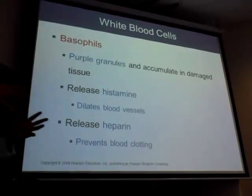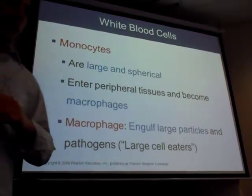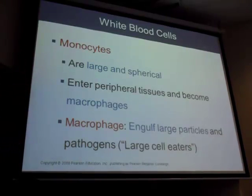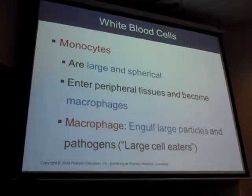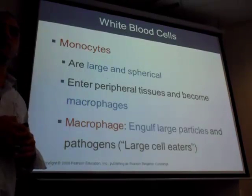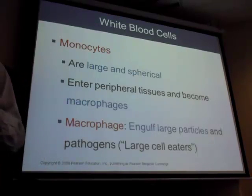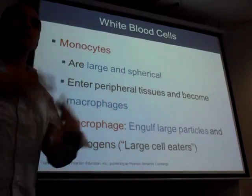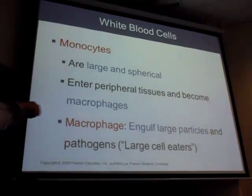To summarize granulocytes: eosinophils attack parasites and worms, neutrophils attack bacteria, and basophils release histamine and heparin. Now for the agranulocytes: the monocyte, a large cell — mono meaning one big cell — is the largest leukocyte and will become a macrophage.